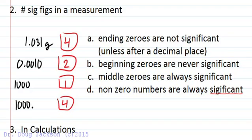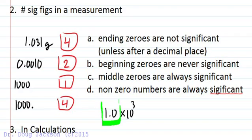If we have scientific notation, don't let it bother you. For example, 1.0 times 10 to the 3: you just ignore the times 10 to the 3 and only look at the beginning part. We have a zero after the decimal place, so this has two significant figures. Do some practice with that on your homework.